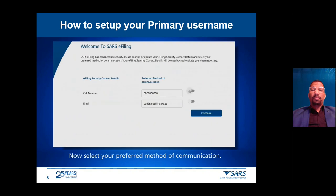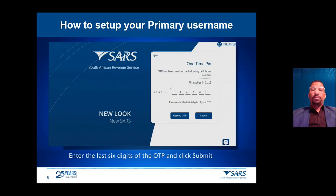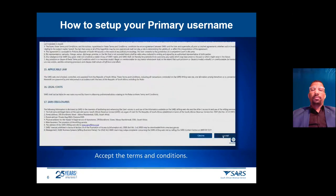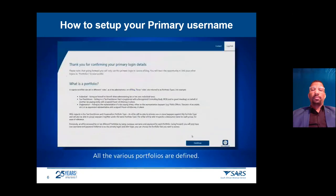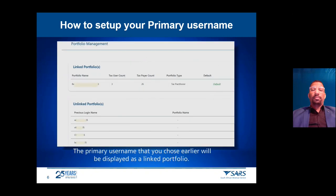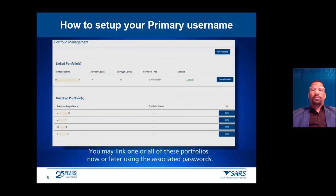Now select your preferred method of communication and click Continue. You will receive a one-time pin via your preferred method. Enter the last six digits of the OTP and click Submit. Accept the terms and conditions. All the various portfolios are defined — click Continue. This screen shows you all the portfolios linked to your ID number. The primary username you chose earlier will be displayed as a linked portfolio, and other portfolios will be listed under unlinked portfolios. You may link one or all of these portfolios now or later using the associated passwords.